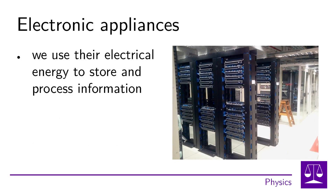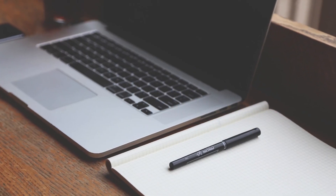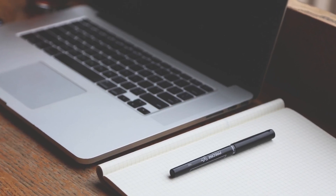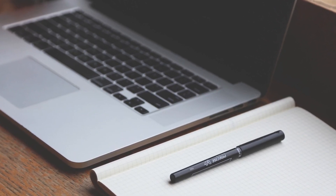In addition to the three types of appliances, other types can be identified. One of them is electronic appliances. Electronic appliances are devices that use their electrical energy to store and process information. Be careful not to confuse electronic appliances with electrical appliances. Examples of electronic appliances are a desktop computer, television, radio, mobile phone, or tablet.